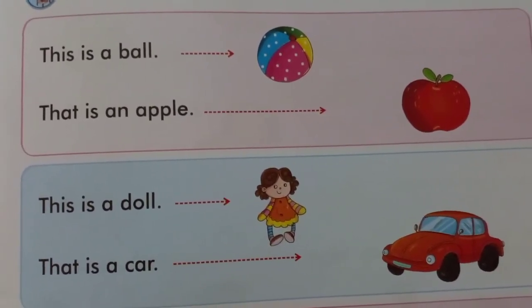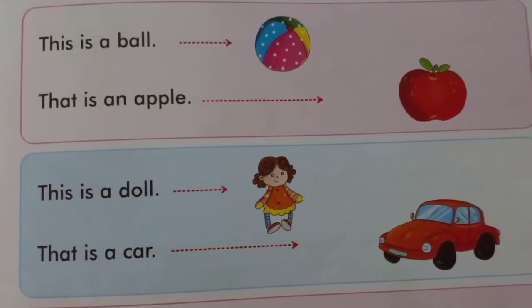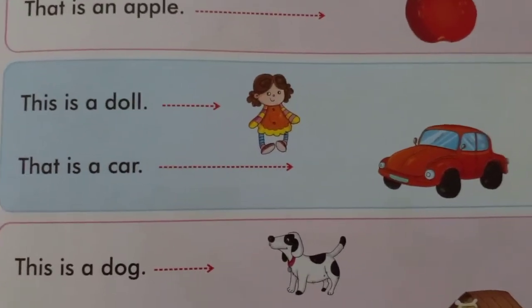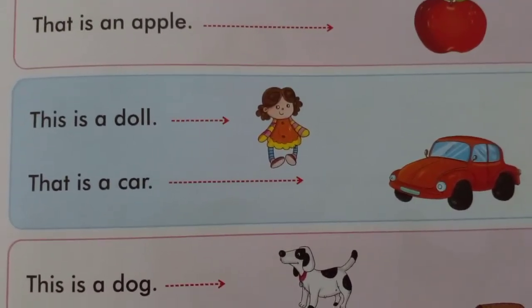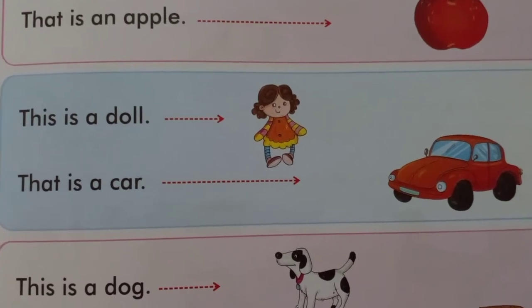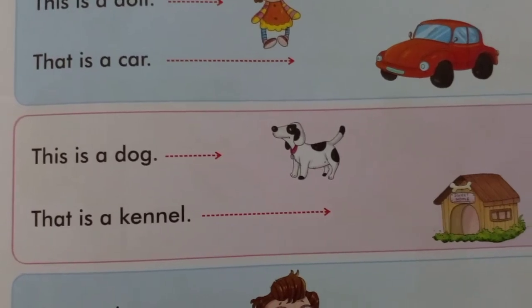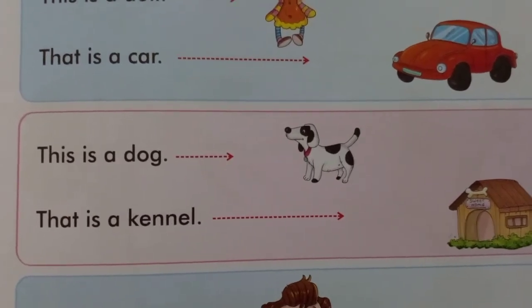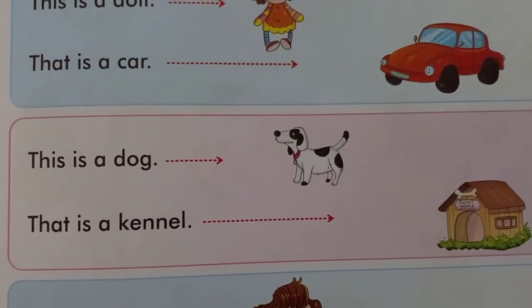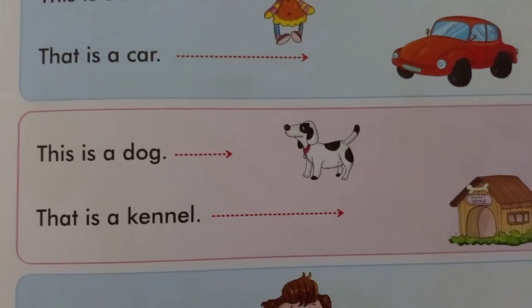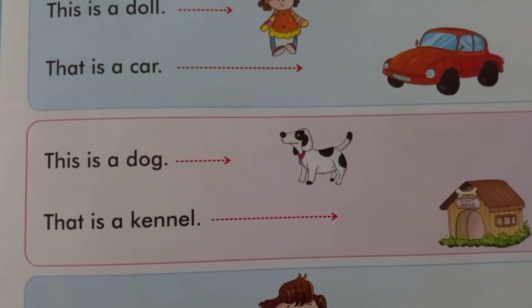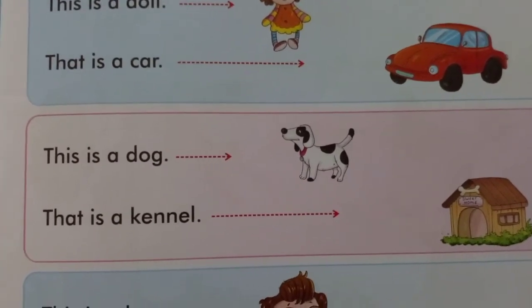Now you can see the image and differentiate. This is a dog. That is a car — the car is far, so you use 'that.' This is a dog. That is a kennel — kennel means where the dog lives, the home of animals, which you have done in general science.